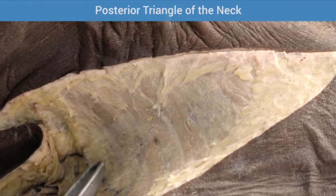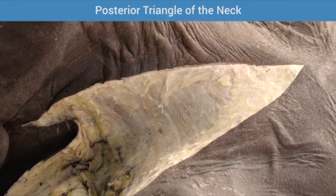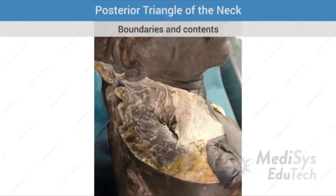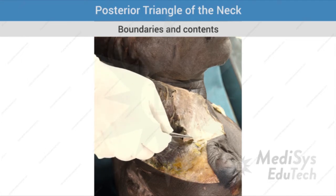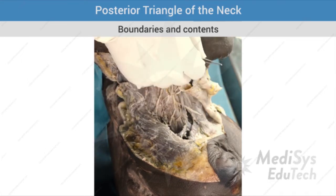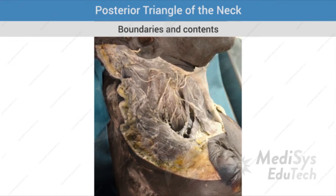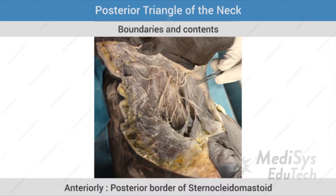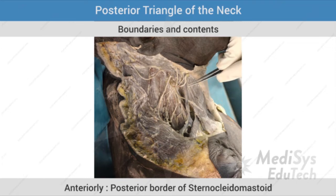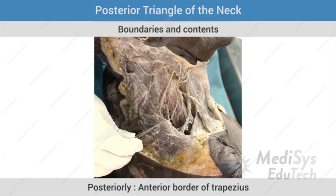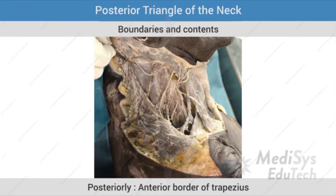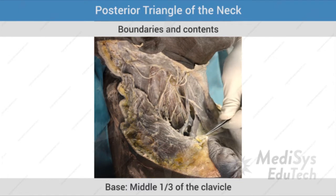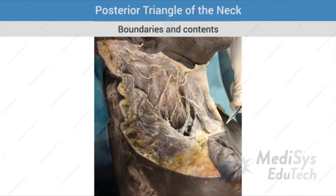The upper part forms the roof of the anterior triangle. Once we remove the superficial fascia, we can clearly define the extent of platysma. Let's reflect the roof of the posterior triangle formed by platysma to expose the boundaries and contents of the posterior triangle. The posterior triangle is bounded anteriorly by the posterior border of sternocleidomastoid, posteriorly by the anterior border of trapezius, and the base is formed by the middle third of the clavicle.